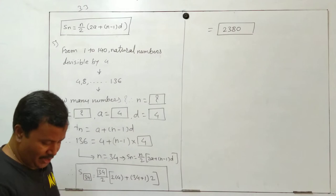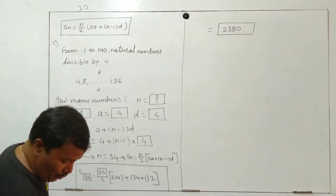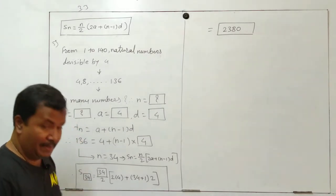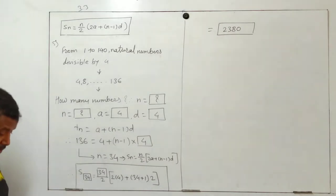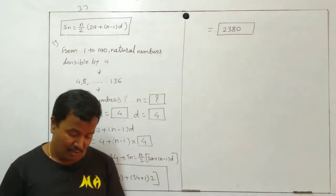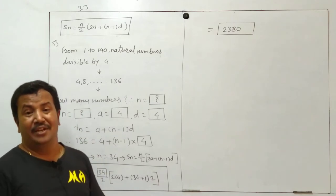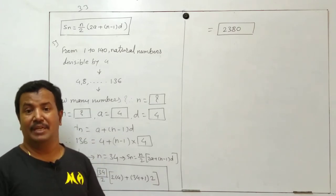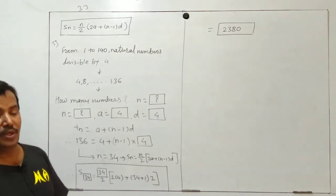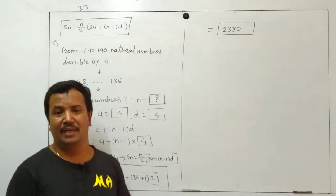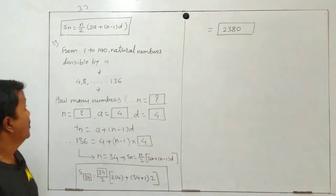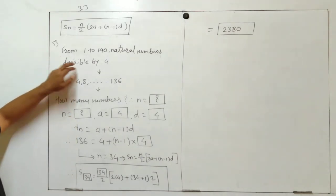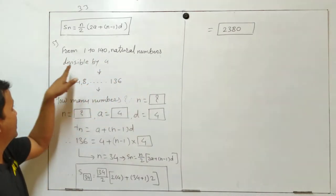Find the sum of natural numbers from one to one forty which are divisible by four. So for this activity, starting from one to one forty, natural numbers divided by four.